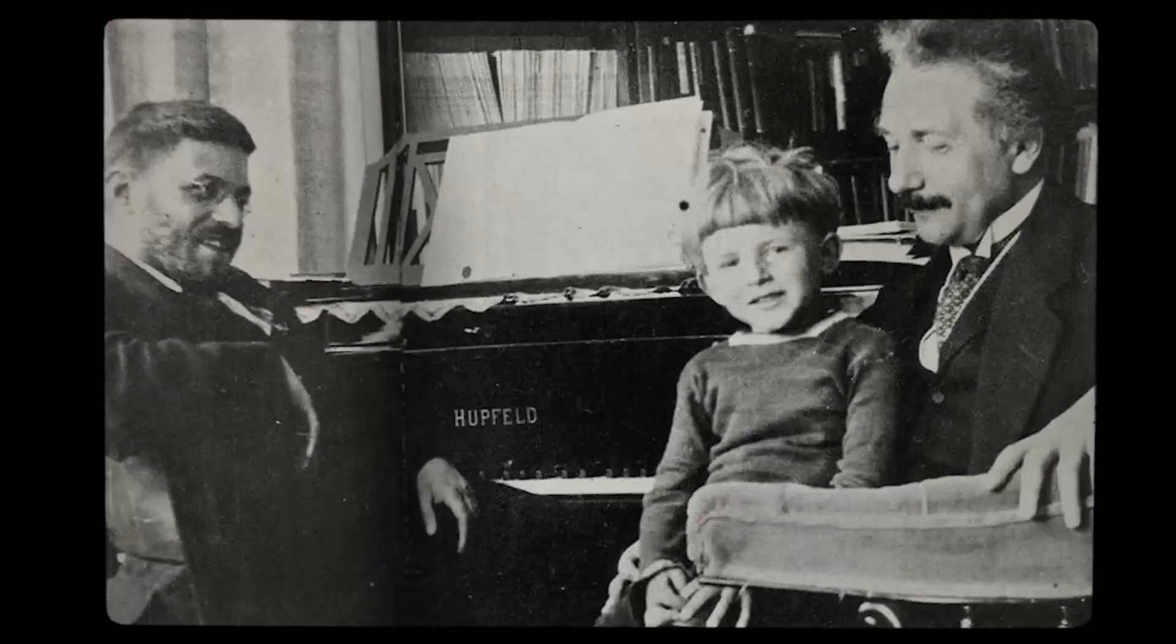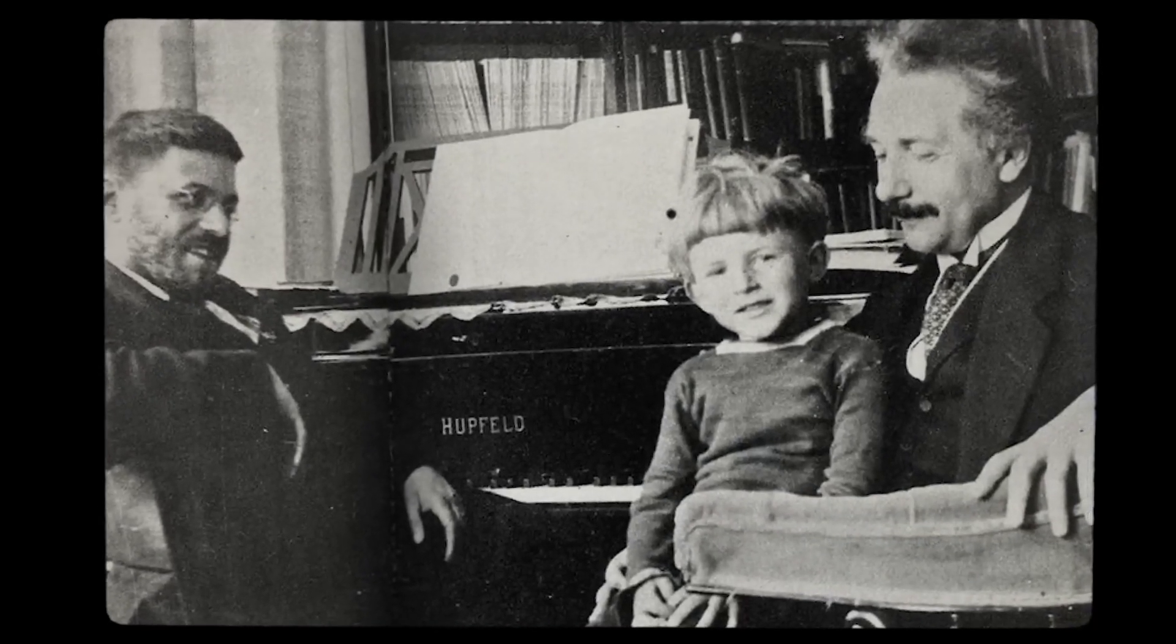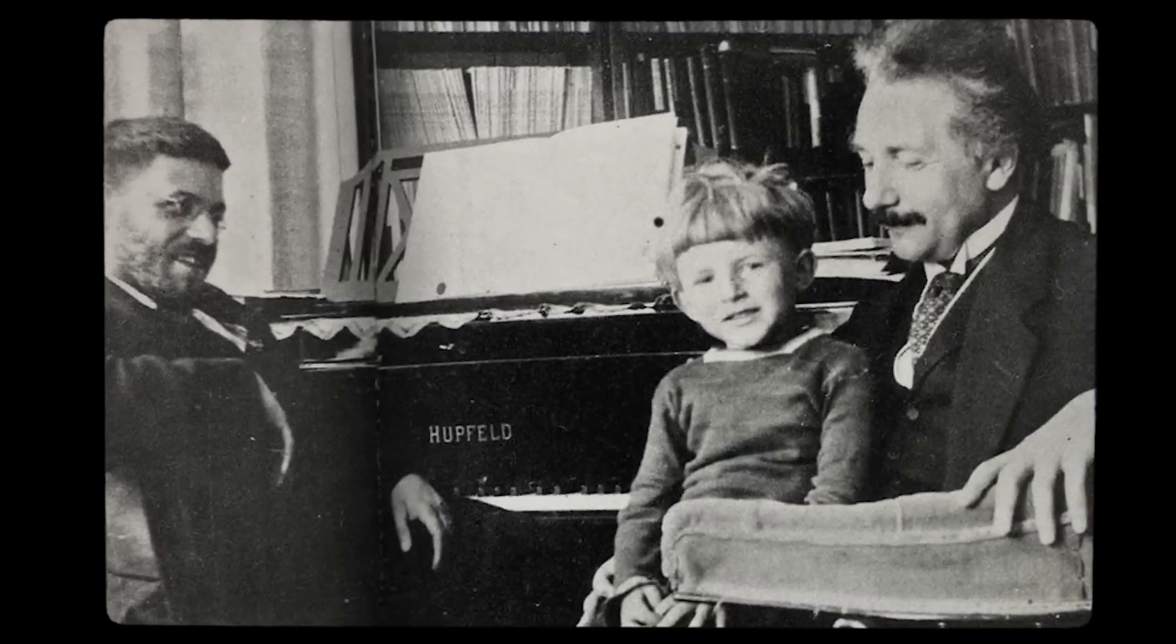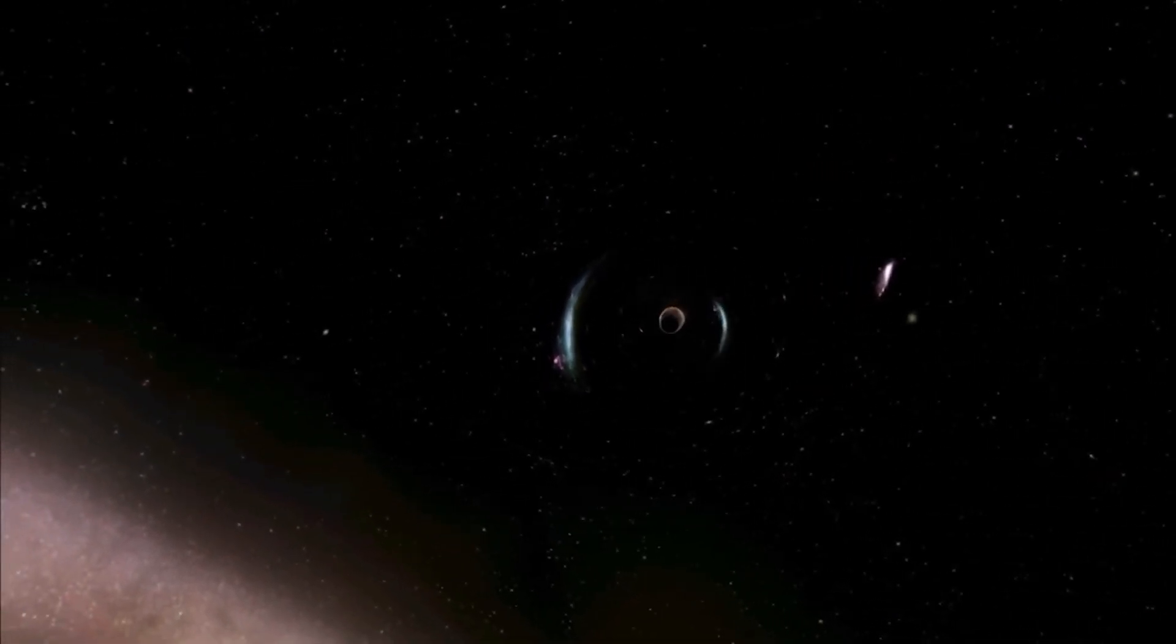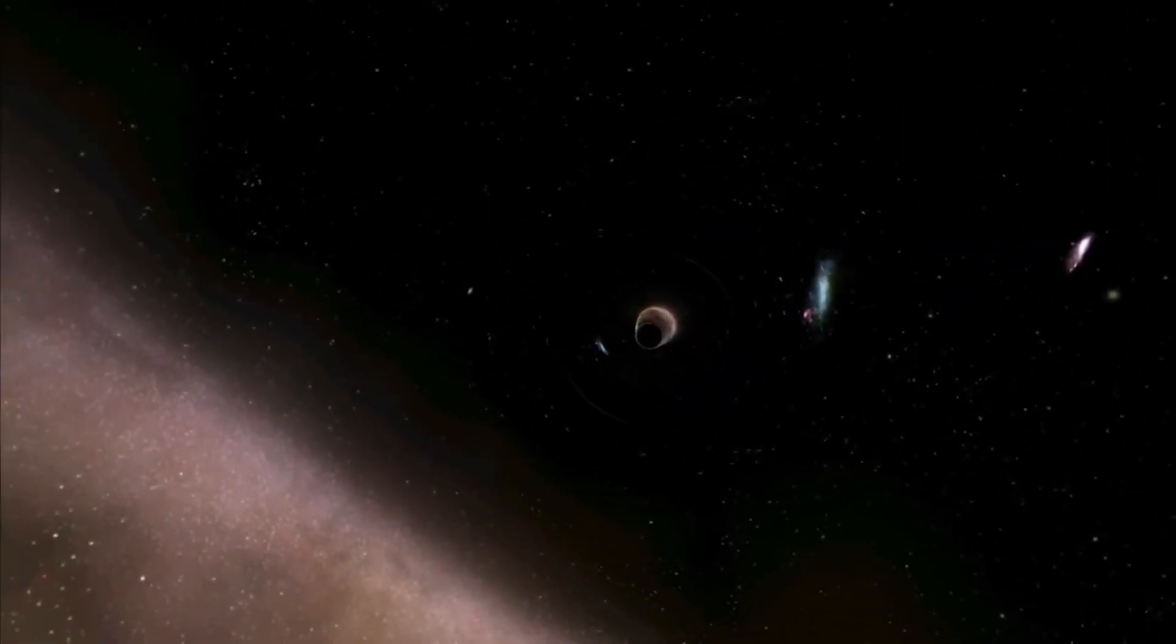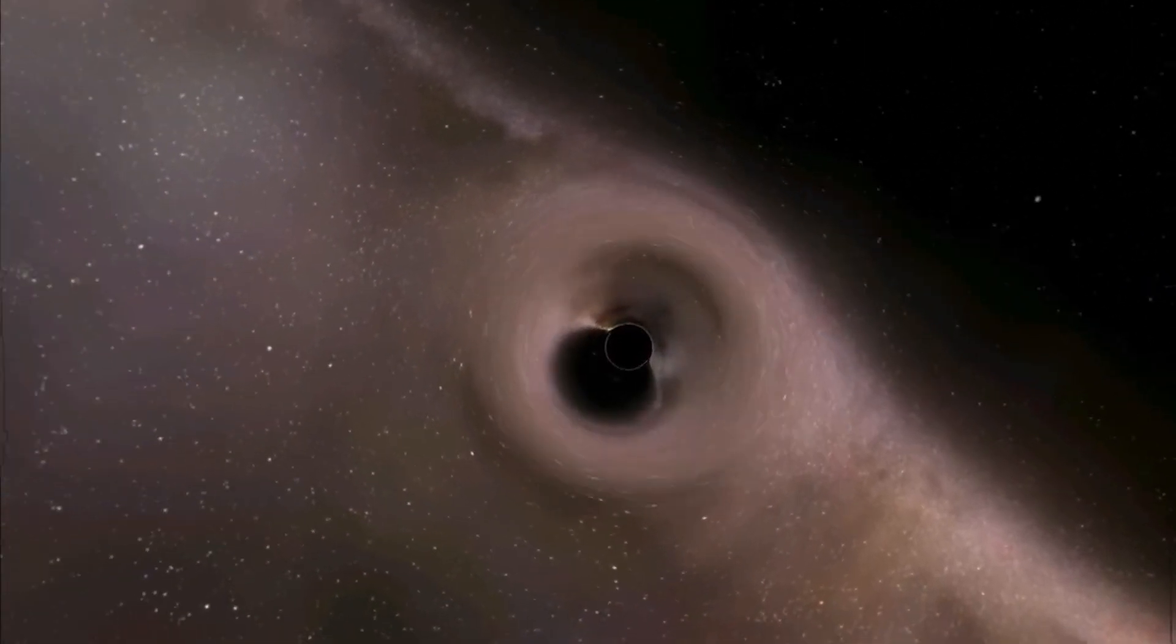This phenomenon, predicted by Einstein's theory of relativity, is due to the warping of space-time caused by the intense mass of the black hole. The event horizon is not a solid physical surface like the crust of a celestial object, but represents a mathematical boundary, beyond which the structure of space and time behaves in a way that defies our intuition.